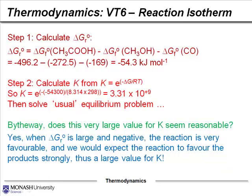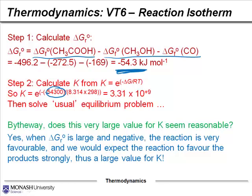The first step is to calculate ΔG° for the reaction. You take the ΔG° of products and subtract from that the ΔG° of the reactants, and you find a value of −54.3 kJ/mol. You can then substitute that into your equation — but be careful: look at the units. When you use the reaction isotherm, your energy term must be in joules. Absolutely must be — it cannot be in kilojoules per mole.